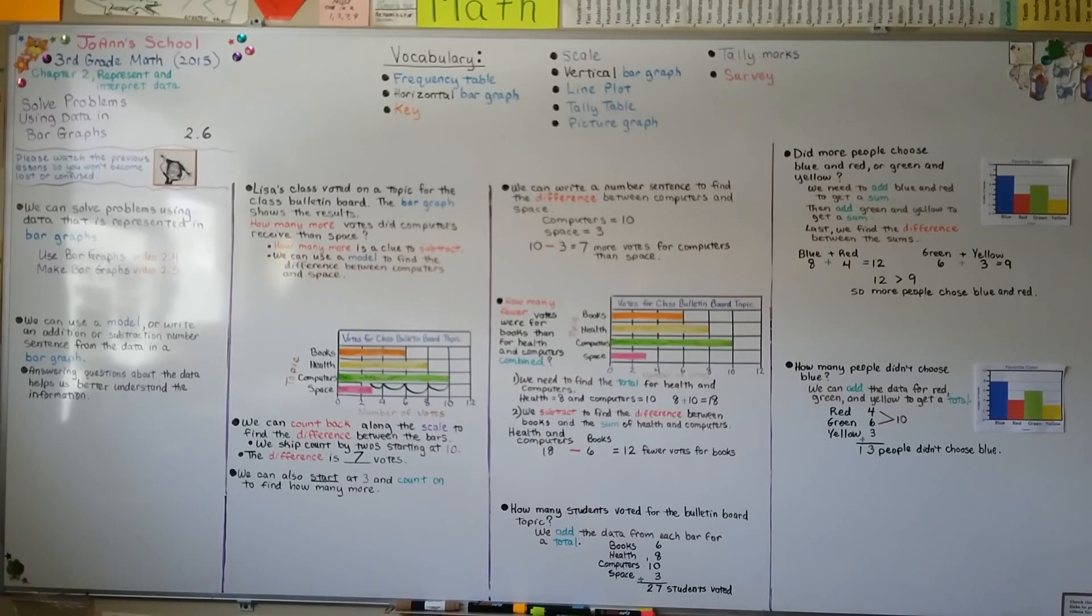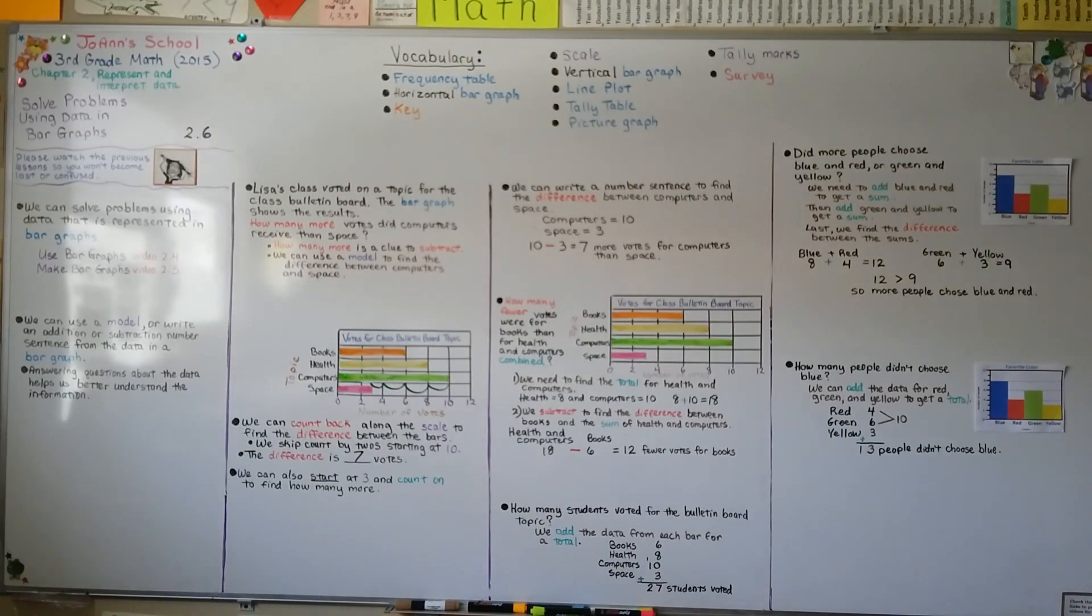So we can solve problems using the data, the information in bar graphs, and we can use a model or write an addition or subtraction number sentence and answer questions about the information. We can use the scale to help us skip count back or forward to compare the bars and the totals. We can even find the total of all of the numbers by finding the total of the numbers for the bars. I hope you have a great day and I'll see you next time. Bye.